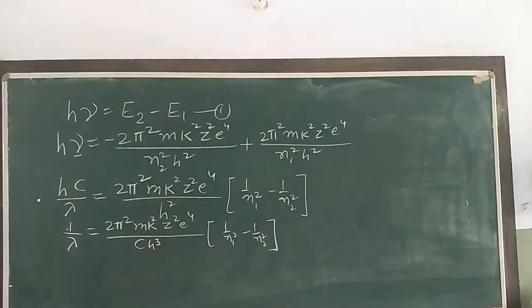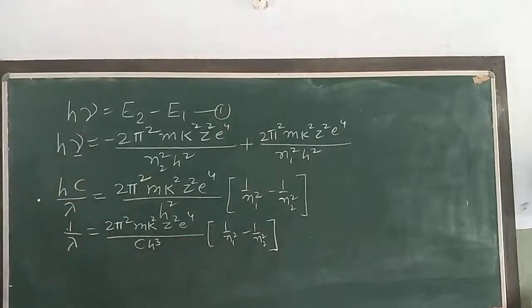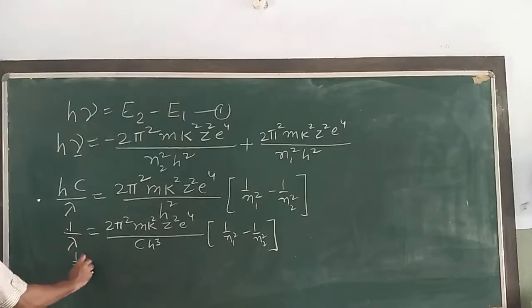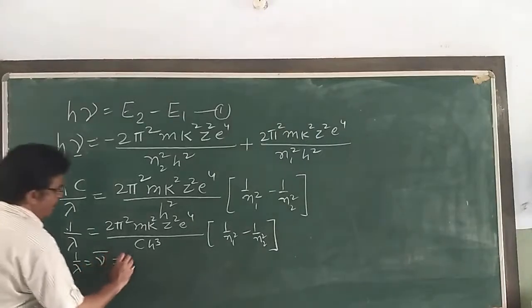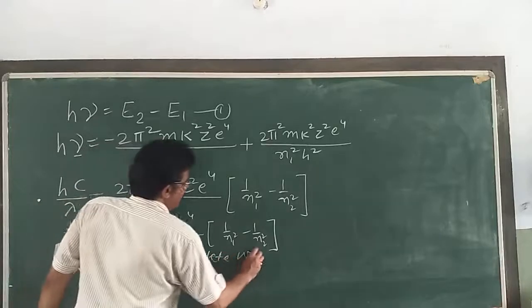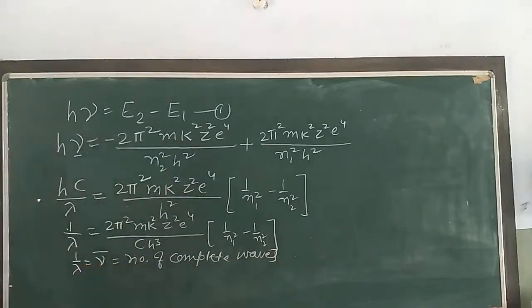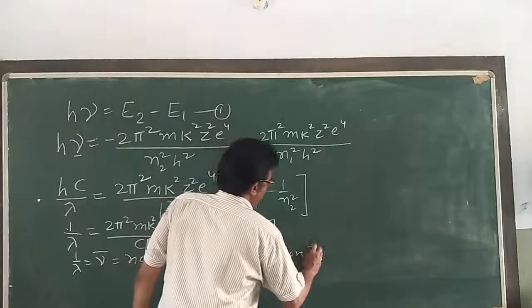So 1/λ = ν̄, which is the wave number of radiation emitted — the number of complete waves in unit length. We can write it in this manner: 1/λ = ν̄ = (2π²Mk²Z²e⁴)/(ch³) × (1/N1² − 1/N2²).